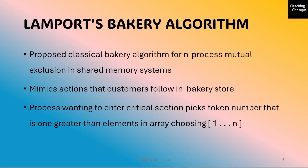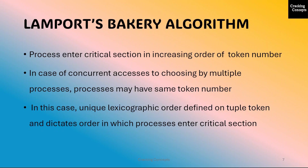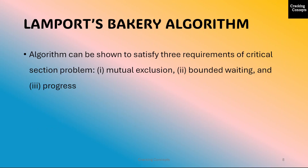The algorithm is so called because it mimics the actions that customers follow in a bakery store. A process wanting to enter the critical section picks a token number that is one greater than the maximum of elements in the choosing array, whose values range for processes from 1 to N. The processes enter the critical section in increasing order of token numbers. In case of concurrent access to the choosing variable by multiple processes, the processes may have the same token number. In this case, a unique lexicographic order is defined on the tuple (token, PID), which dictates the order in which the processes enter the critical section. The algorithm satisfies the three requirements of the critical section problem: mutual exclusion, bounded waiting, and progress.